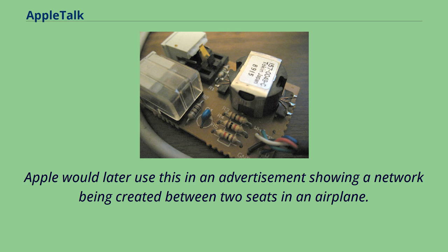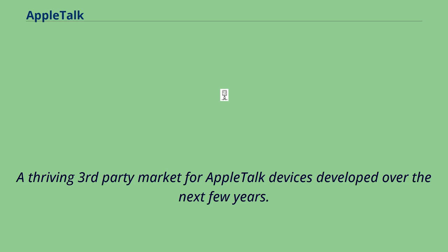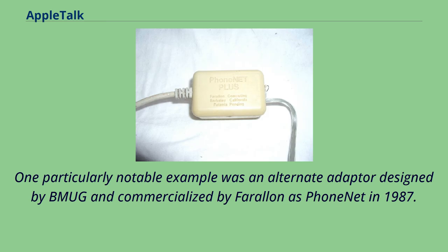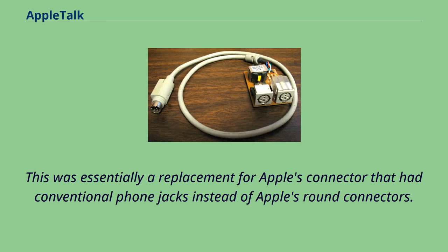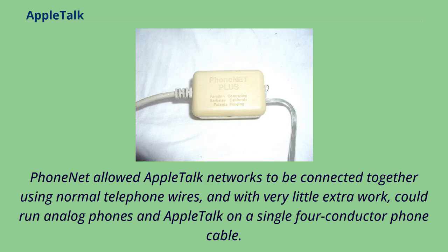Apple would later use this in an advertisement showing a network being created between two seats in an airplane. A thriving third-party market for AppleTalk devices developed over the next few years. One particularly notable example was an alternate adapter designed by Bmug and commercialized by Farallon as PhoneNet in 1987. This was essentially a replacement for Apple's connector that had conventional phone jacks instead of Apple's round connectors. PhoneNet allowed AppleTalk networks to be connected using normal telephone wires, and with very little extra work could run analog phones and AppleTalk on a single four-conductor phone cable.